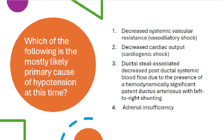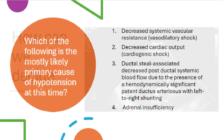To treat shock, we need to identify the cause, which is usually one of the following: vasodilatory shock, cardiogenic shock, ductal shock, or adrenal insufficiency. How can we differentiate between them?